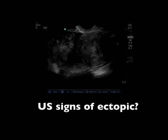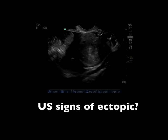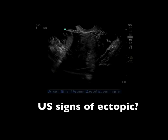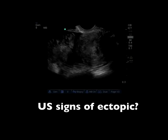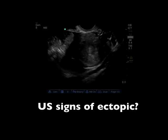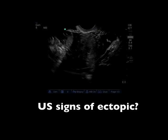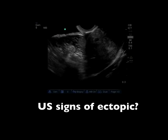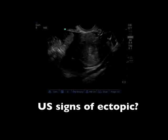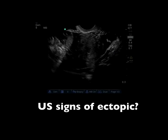Some of the ultrasound signs of ectopic pregnancy would be evidence of free fluid or adnexal masses. This is a transvaginal scan — we can see the bladder on the far left of the screen right where the probe marker is, making this a sagittal image. We can also see some free fluid surrounding the uterus, and fanning from right to left they're also able to visualize an enlarged adnexa.